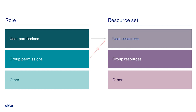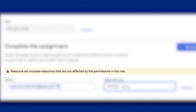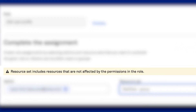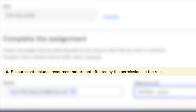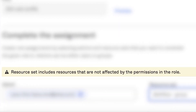Also, even if a role has user permissions and is assigned a resource set without user resources, the admin will not have access to those permissions as there's no resources assigned. If there's a mismatch between role permissions and resource sets, you'll see a warning in the user interface, but this warning is simply to make sure you're aware of the mismatch. You can still use the role. This allows admins the flexibility to reuse roles and resource sets.